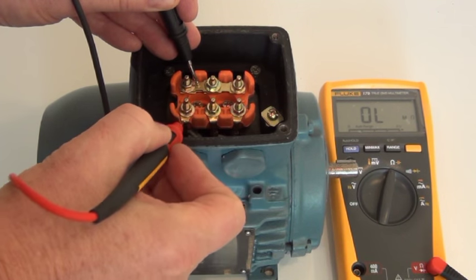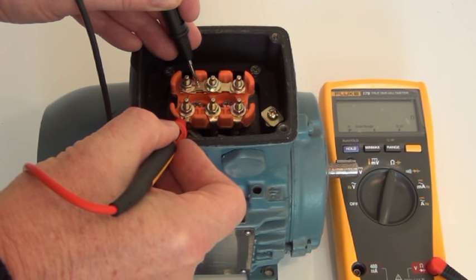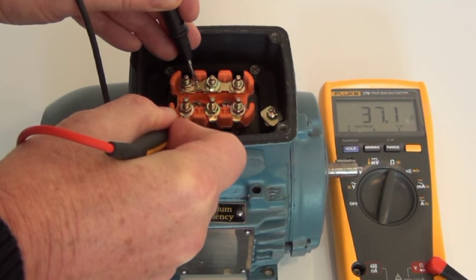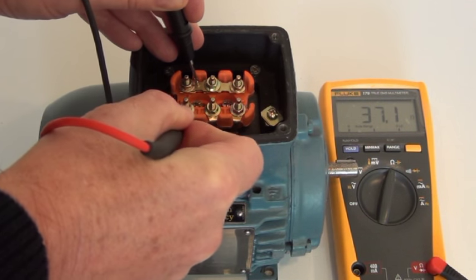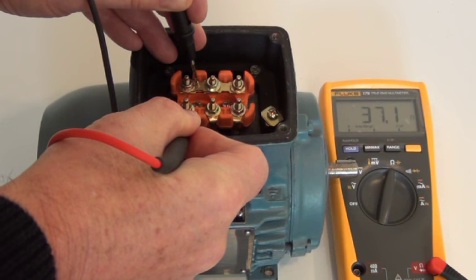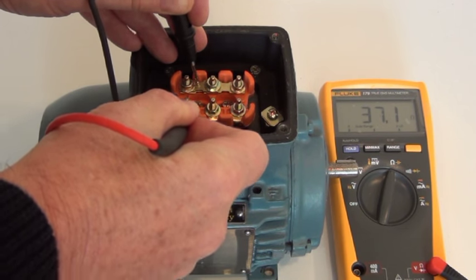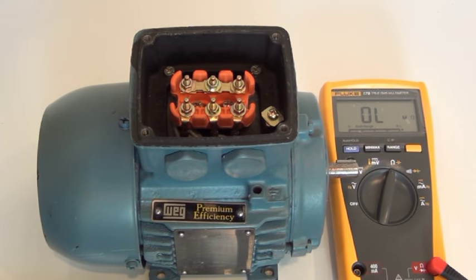Then I'll touch it onto the next terminal, which is W, and I've got 37.1 ohms. So that motor is showing that it is balanced to within 0.5 of an ohm, so that motor would function correctly.